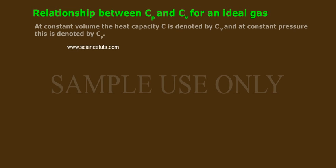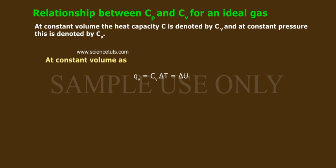Relationship between CP and CV for an ideal gas. At constant volume, the heat capacity C is denoted by CV, and at constant pressure, this is denoted by CP. At constant volume, QV equals CV delta T equals delta U.